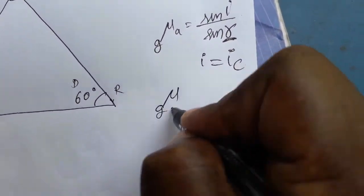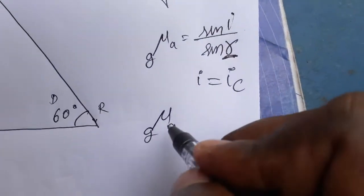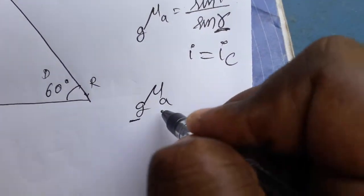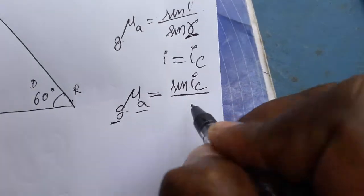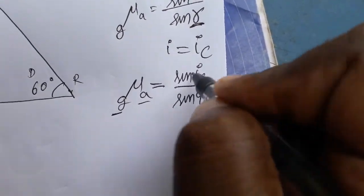μ of G to A - total internal reflection is applicable when light passes from denser to rarer medium. G to A equals sin IC divided by sin 90. Refraction will happen at 90 degrees when IC, the critical angle, is there.